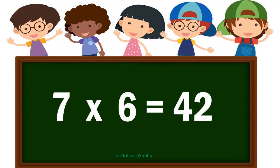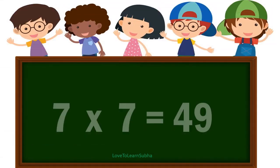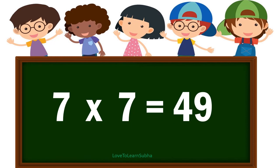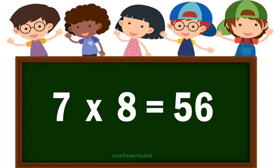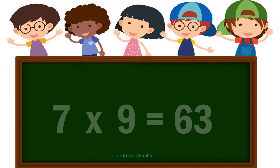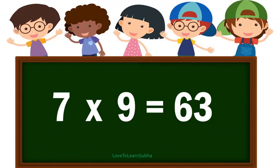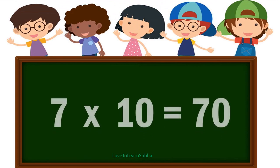7 6s are 42. 7 7s are 49. 7 8s are 56. 7 9s are 63. 7 10s are 70.